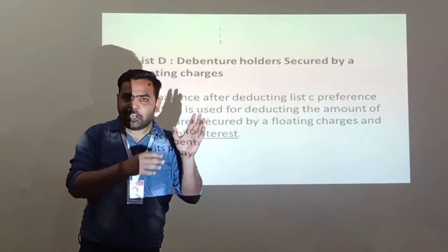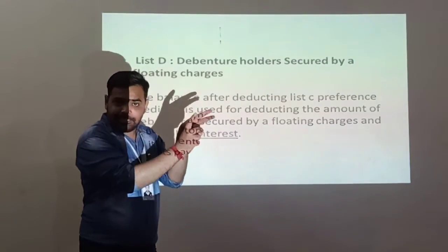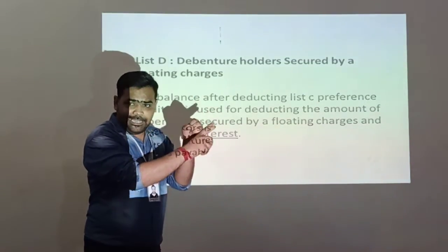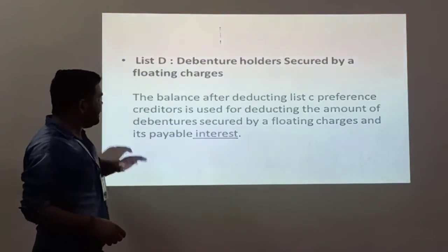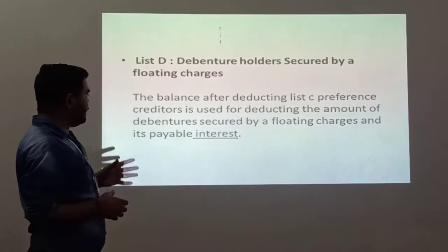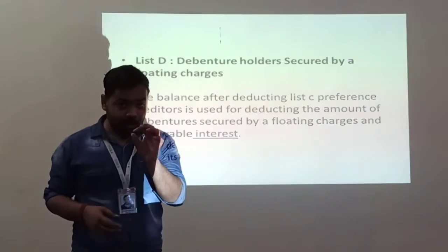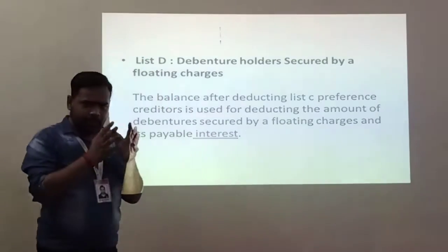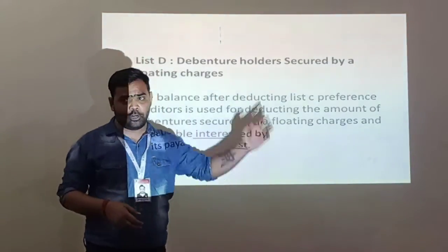The chronology is: first List A - assets not specifically pledged, then plus surplus of List B, then deduct List C preferential creditors. If there is any balance, that is used for the debenture holders. The balance after deducting List C is used for the debenture secured by floating charges, along with its interest - not only the debenture holder but its interest also.